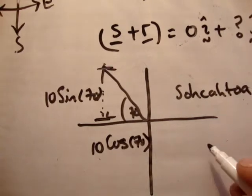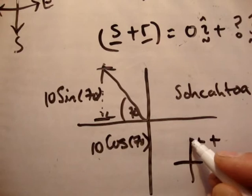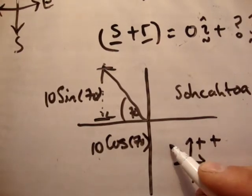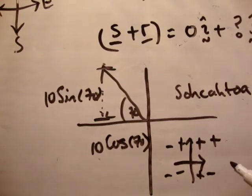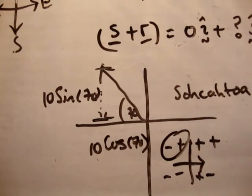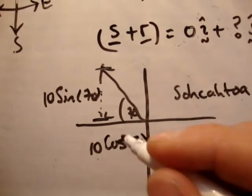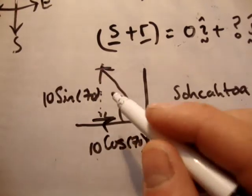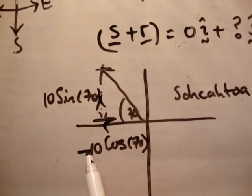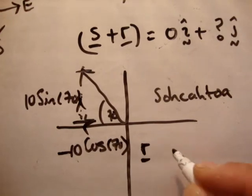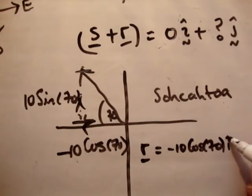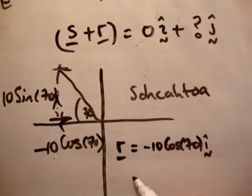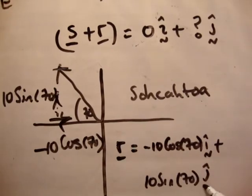We know that the magnitude of r is equal to 10, so h equals 10. The i-hat and j-hat components are 10 sine 70 and 10 cos 70. Now look at directions. We have plus i-hat and plus j-hat in the first quadrant; this vector r is in the second quadrant, so it's got minus i-hat and plus j-hat. So the vector r is equal to minus 10 cos 70 i-hat plus 10 sine 70 j-hat.